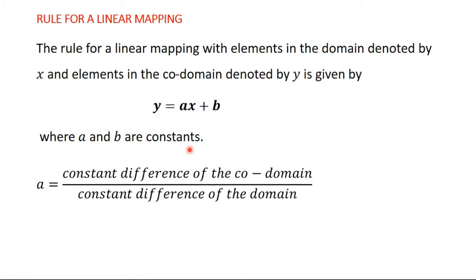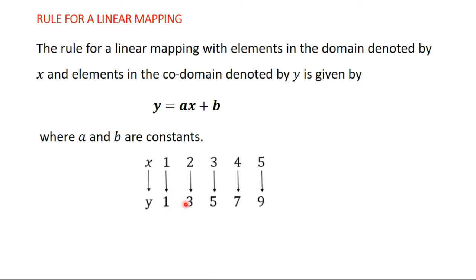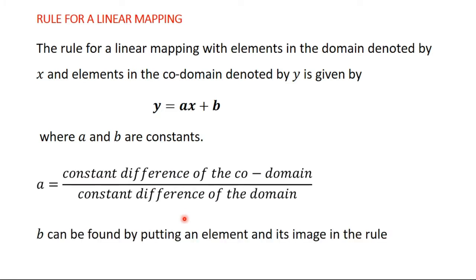So how do we find a and b? a is given by the constant difference of the codomain divided by the constant difference of the domain. So if you want to find a, you first find the constant difference of the codomain and divide it by the constant difference of the domain. b can be found by putting an element and its image in the rule.